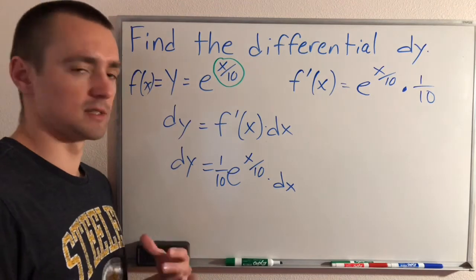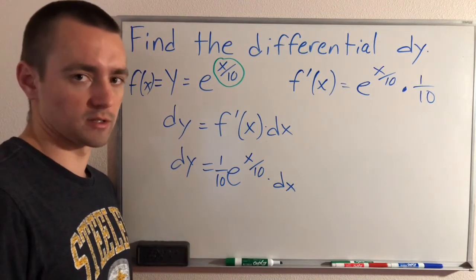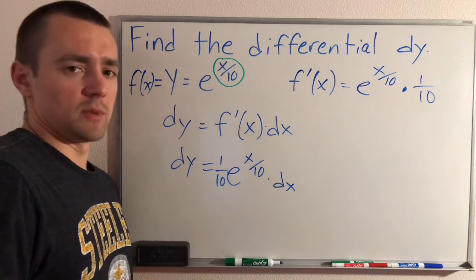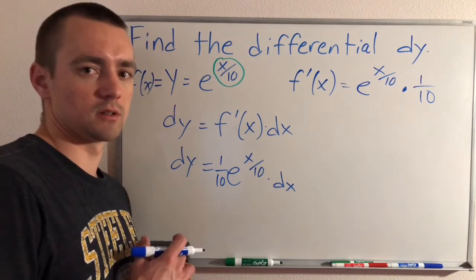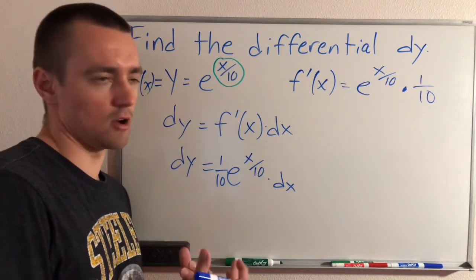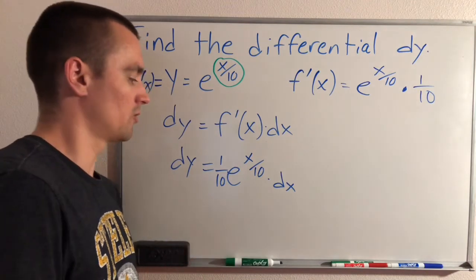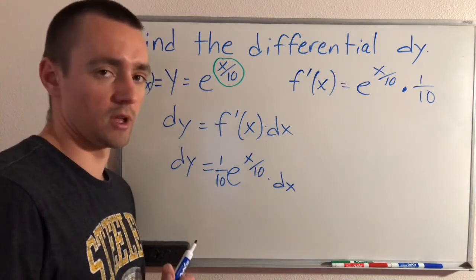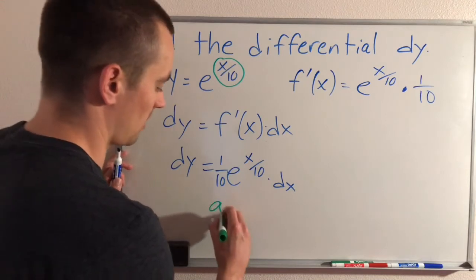But the reason why this is interesting or why it matters is if we think about our linear approximation that we've been talking about this week, what a linear approximation gives us is a linear function, which is an estimate of the function that we are linearly approximating around that point. So this is really only interesting if we are given or if we are investigating basically a specific a value,